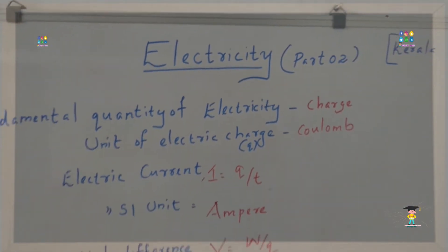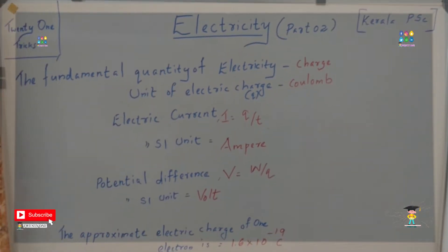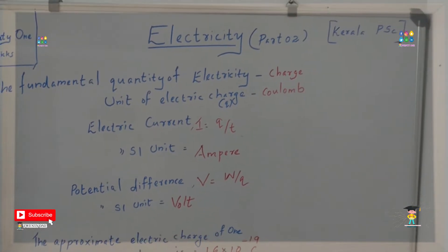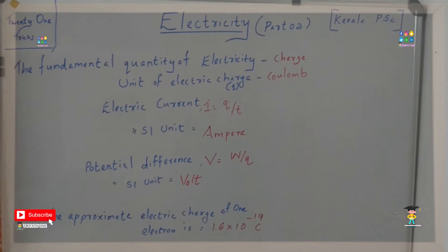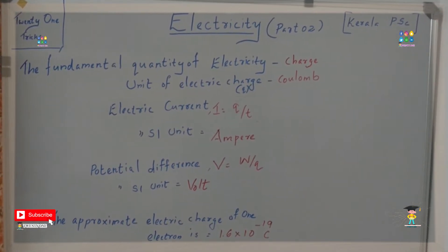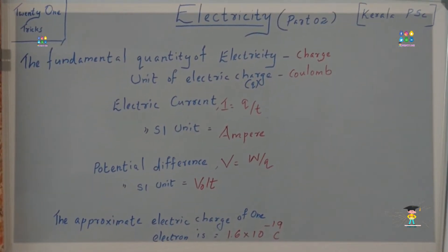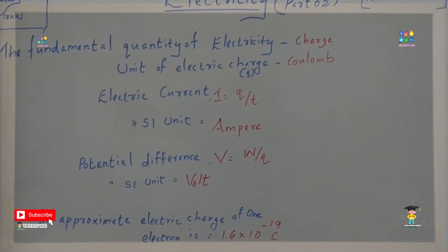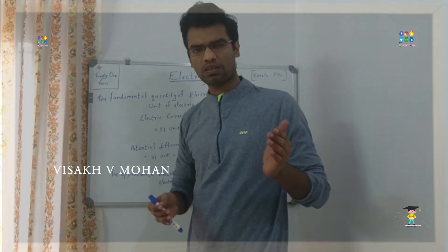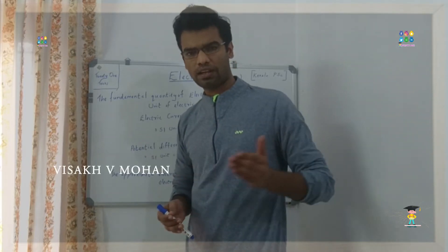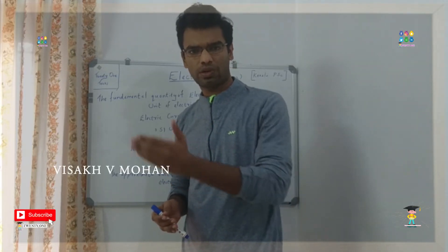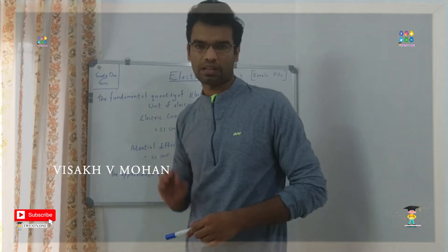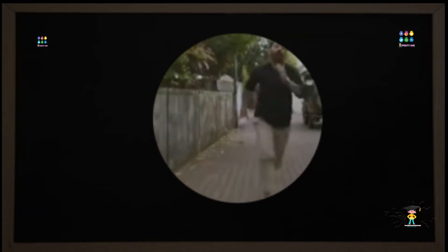Now let's take a look at electricity. We have to discuss about the conductor, semiconductor, or the insulator. Let's take a conductor and take a metal — there are free electrons. This flow is the electron flow. This is also called Static Electricity.